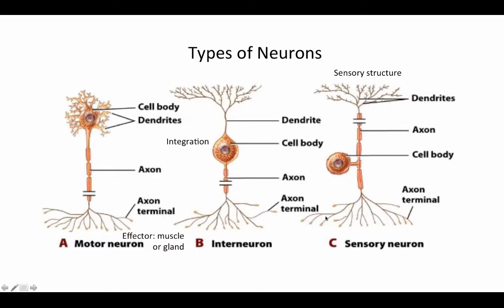Finally, there are sensory neurons, which are generally unipolar — there's just a single projection coming off the cell body, and that is the axon. The axon makes a direct connection with the dendrites, and the cell body is somewhere in the midst of the axon.